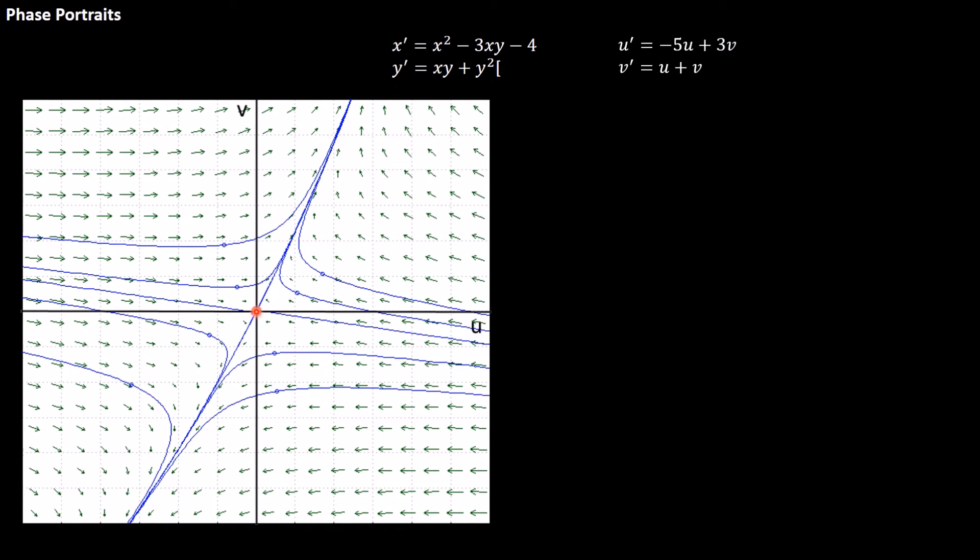So you're not supposed to know how I got these just yet. But suffice it to say that near this point, negative 1, 1 in the original plane that we had over here, and in this coordinate system u, v, the differential equation is approximately given by these equations. Just take my word for it for now. So if we know this, then we're very happy because we can solve these equations. They're linear.